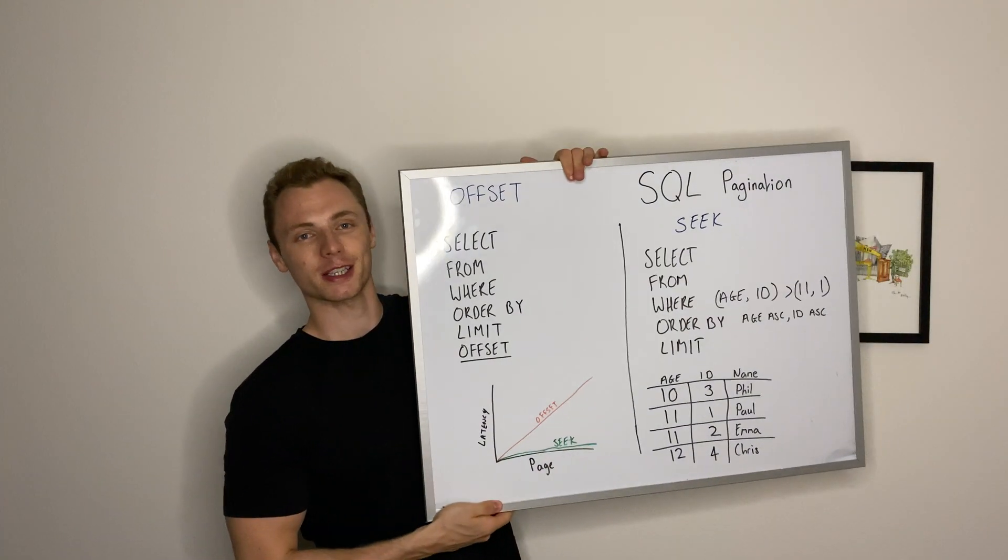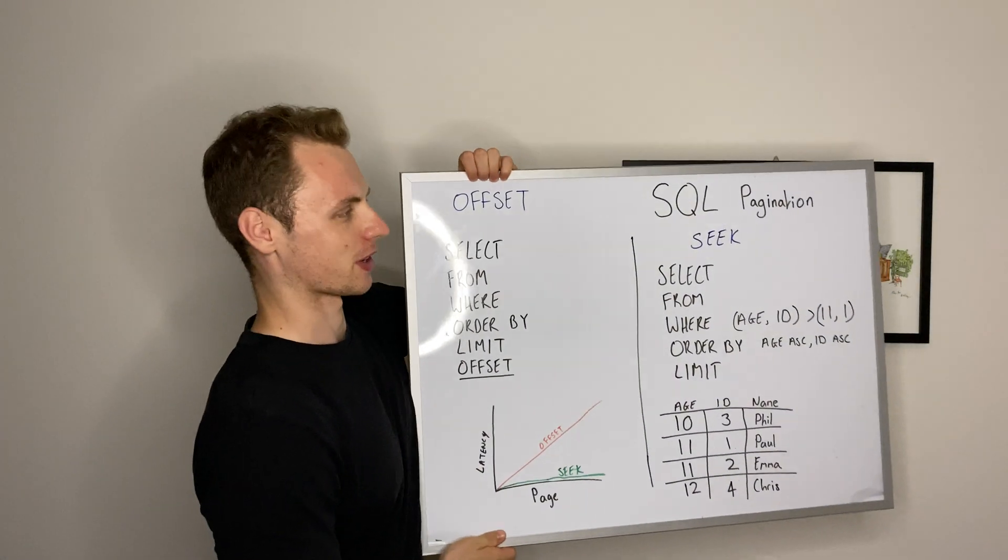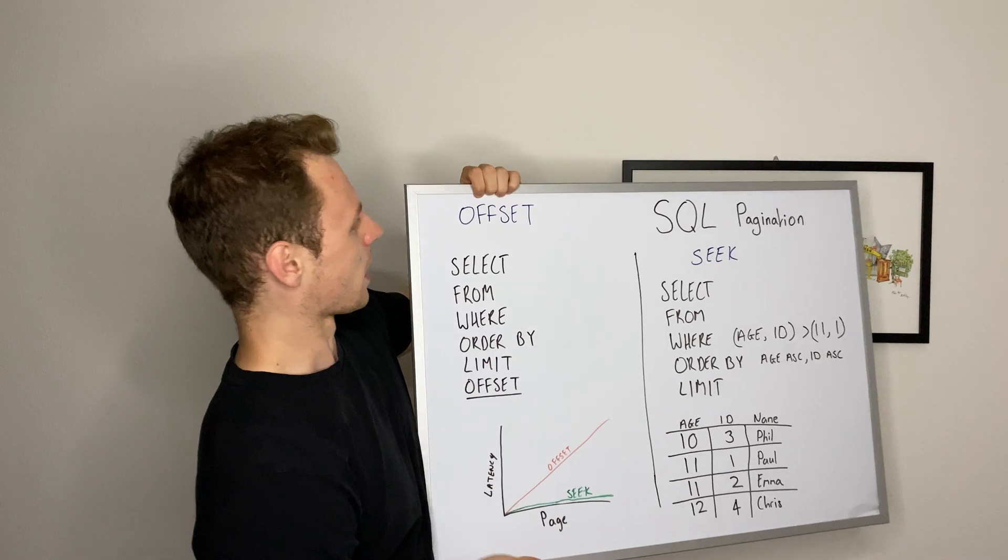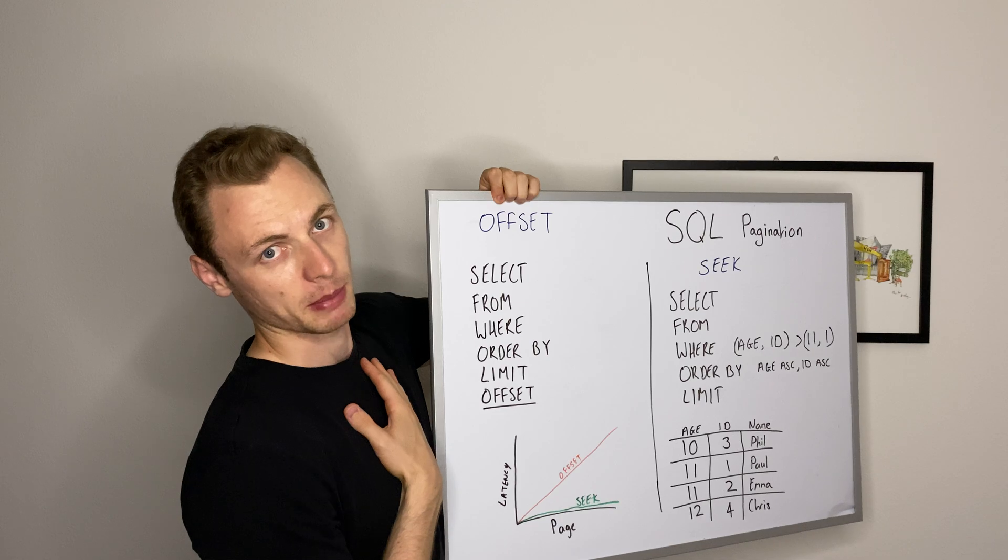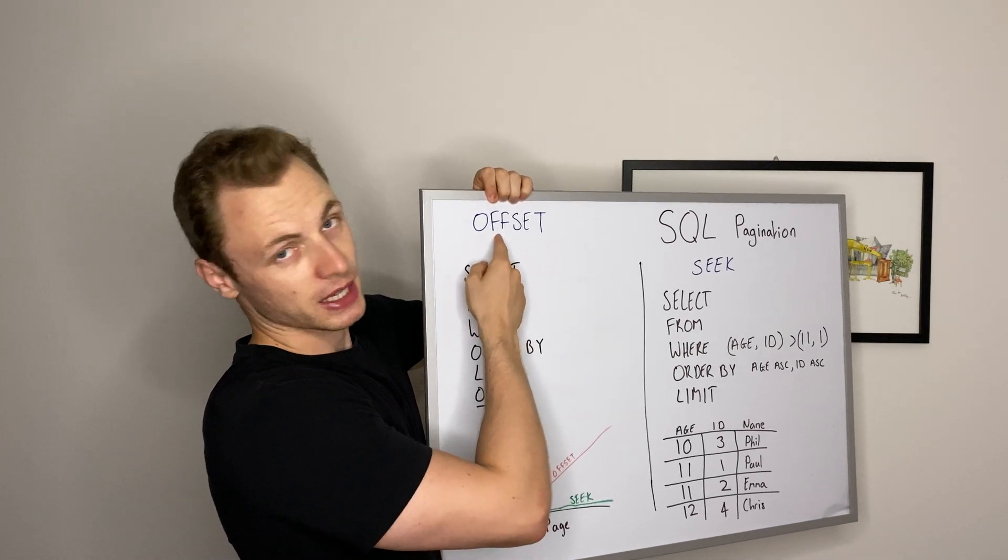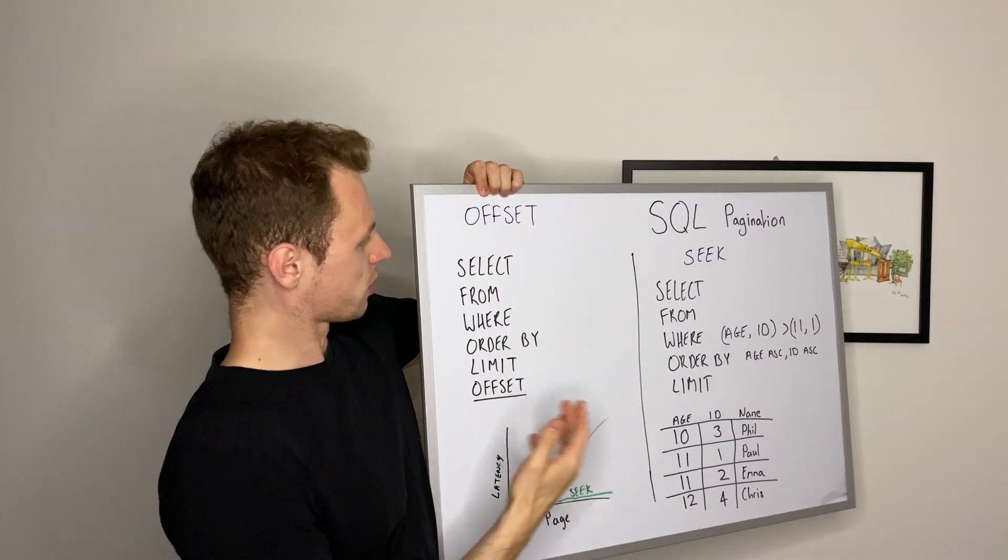I've got a nice new board for you guys, hopefully you can see this. I'm going to get straight to the point. The first SQL pagination method you can choose is going to be the offset method.